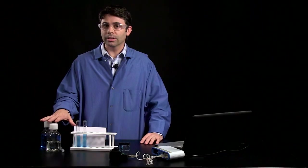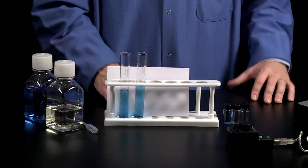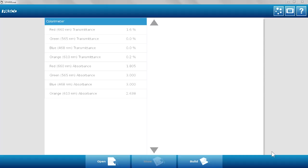In this case, we're going to be looking at a very simple system of blue dye and bleach, and we're going to use the PASCO colorimeter and SparkView software.